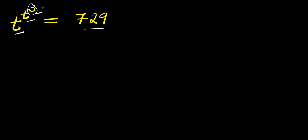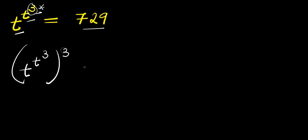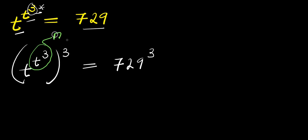As usual, we are going to raise each part of this equation to the power of one-third. This is raised to the power of one-third equals 729 raised to the power of one-third. So what we are going to do next — I'm going to treat this exponent as n, and I will treat this as m.